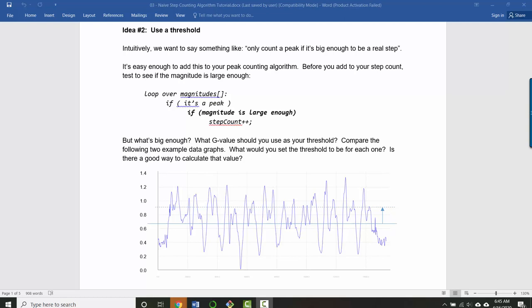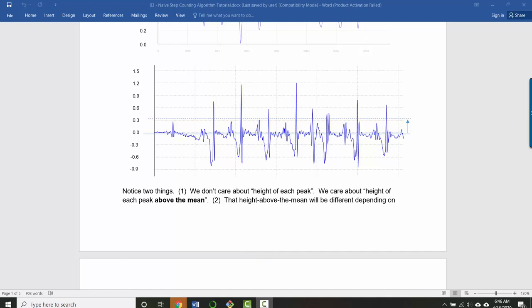Before we look at the math, I want to point out two features of what we're trying to do. The threshold is not a threshold above zero. It's a threshold above wherever the mean of our data is. This is probably a poor example to show because the mean looks to be very close to zero. But you could imagine a situation where your phone was constantly accelerating in different directions. And in that case, the mean might not be around zero.